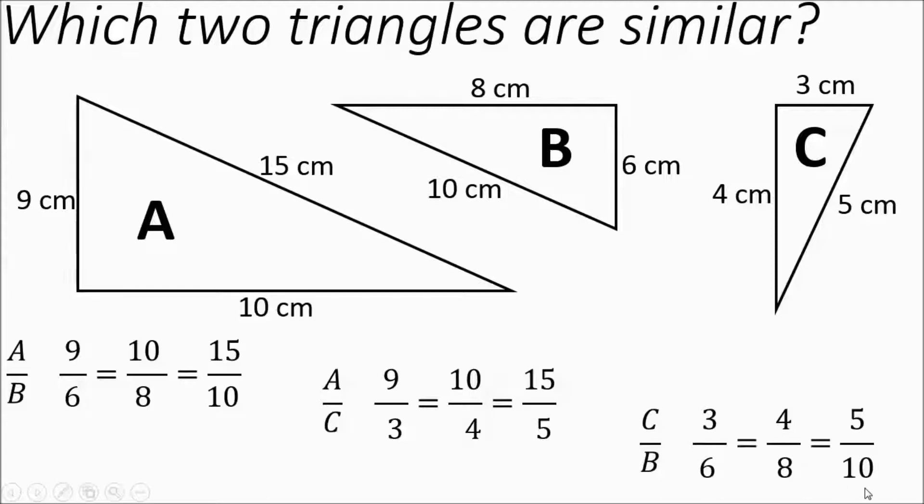So now what we're going to do is see if cross products are equal. If you've watched some of my other videos, you'll have learned about how cross products are always equal in true proportions. So in this first one, I'm going to see if 9 times 8 is equal to 6 times 10. 9 times 8 is 72. 6 times 10 is 60. Nope, that is not going to work. A and B are not similar.